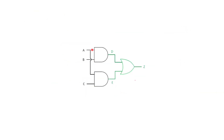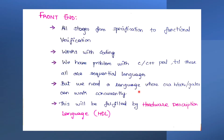For example, consider a circuit with three inputs A, B, and C going into two AND gates, whose outputs D and E feed into an OR gate to produce output Z. If we get the output of the AND gates sequentially — first D and then E after some delay — it won't work correctly. We need a language that works in parallel so that D and E are produced simultaneously and fed into the OR gate to get the desired output. That is why we use hardware description language instead of C or C++.